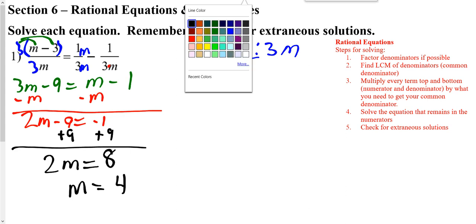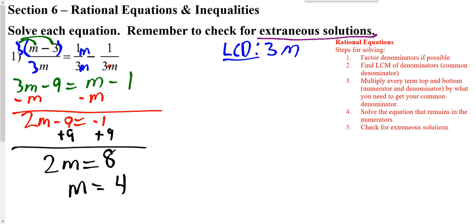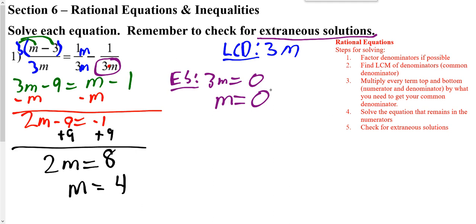When we're looking at extraneous solutions, that means it might be an answer we got from correctly solving it, but it doesn't work in the original problem. Extraneous solutions come from taking your denominator and setting it equal to 0. If we had worked it out and gotten 0, we would know that answer would not work. But since we got something other than 0, M being 4 is our answer.